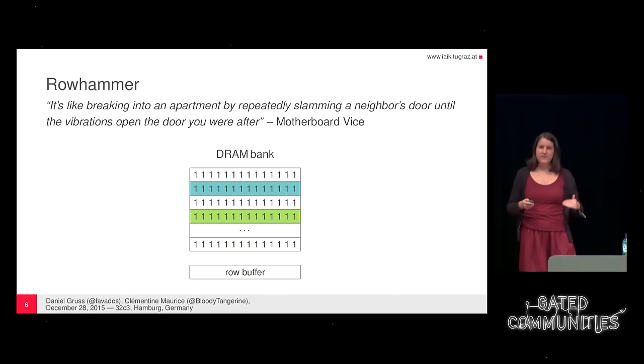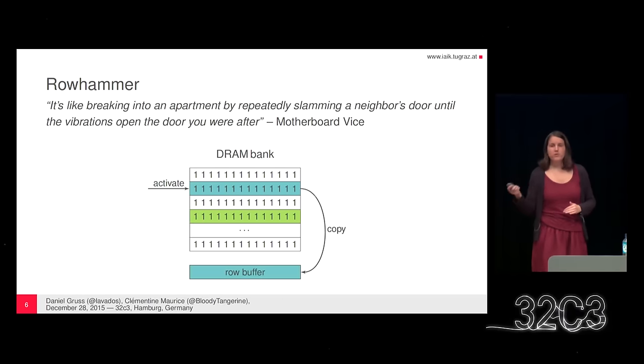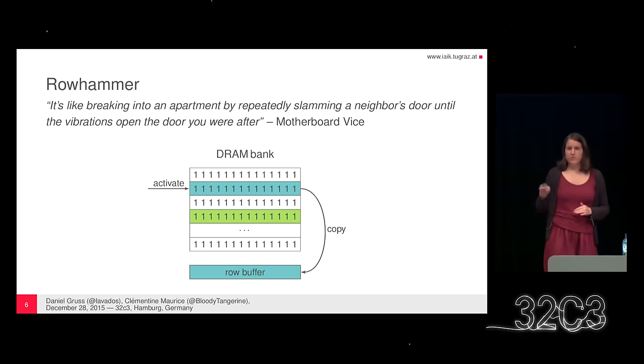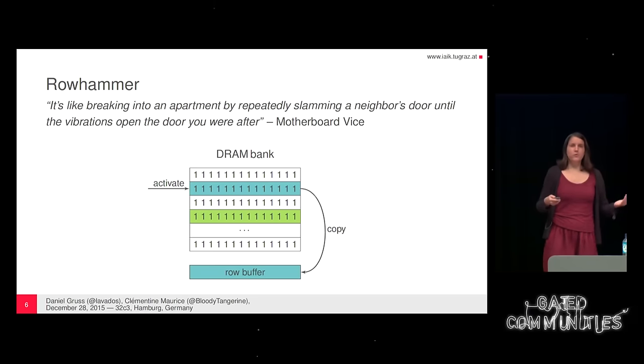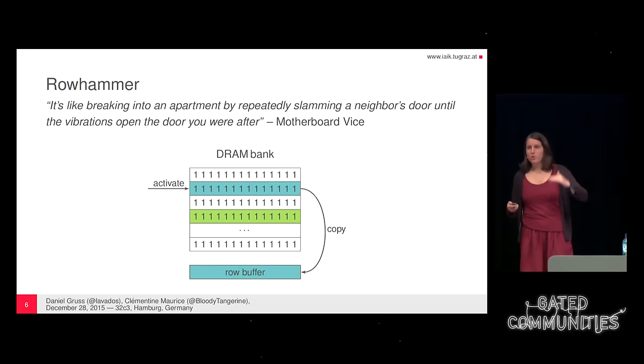There's an analogy I really like: Rowhammer is like breaking into an apartment by repeatedly slamming a neighbor's door until the vibration opens the door you were after. In DRAM, you issue an activate command on a special row that copies into the row buffer. You want to issue many activate commands as fast as possible. The issue is that if you just access this row, you will hit the row buffer which acts like a cache. So you need to activate another row, then this row again, then another row — and then you have your bit flips.